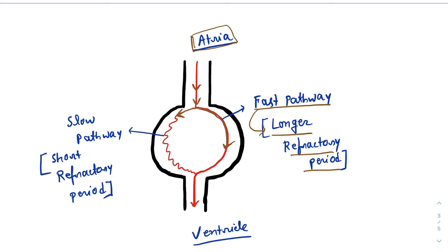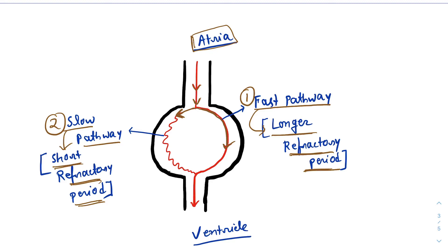Refractory period means the period during which the fast pathway cannot be excited with any more impulse. The other one is the slow pathway — as the name suggests, the impulse can travel slowly in this pathway. But the slow pathway has a short refractory period. So in the AV node there are two pathways: the fast pathway, where impulses travel faster but it has a longer refractory period, and the slow pathway, which has a short refractory period.